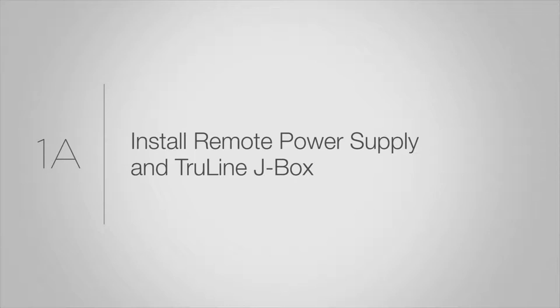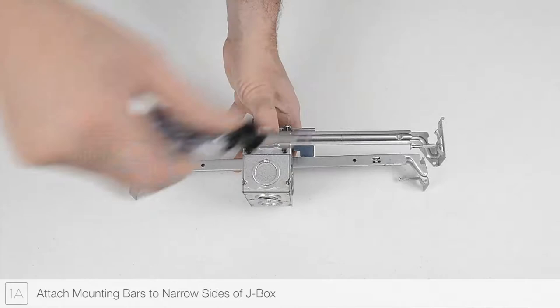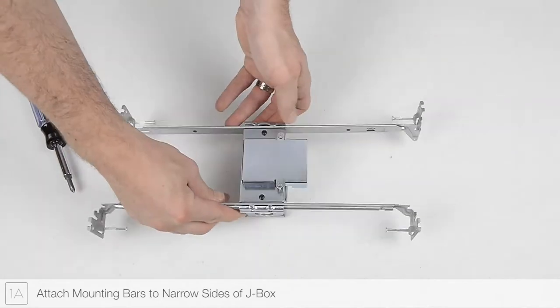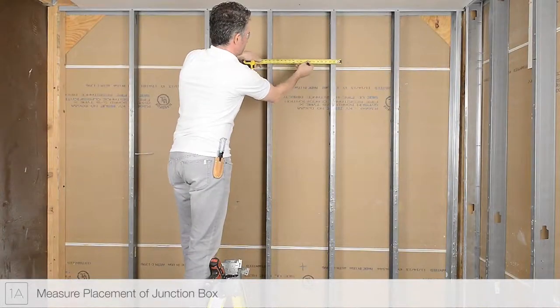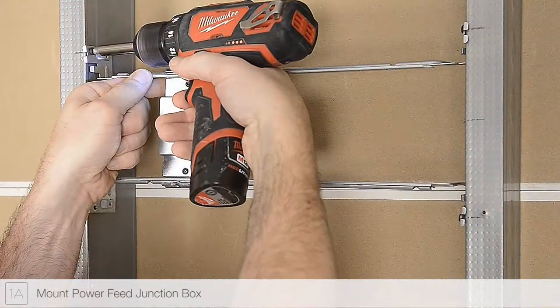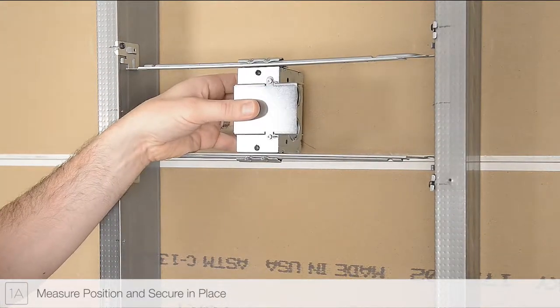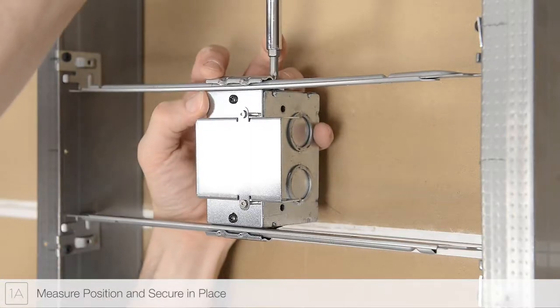Step 1A: Attach the supplied mounting bars to the sides of the junction box as shown. Measure and mark the placement of the junction box. Mount the junction box to the studs. Adjust the junction box to match the marked position and secure in place.